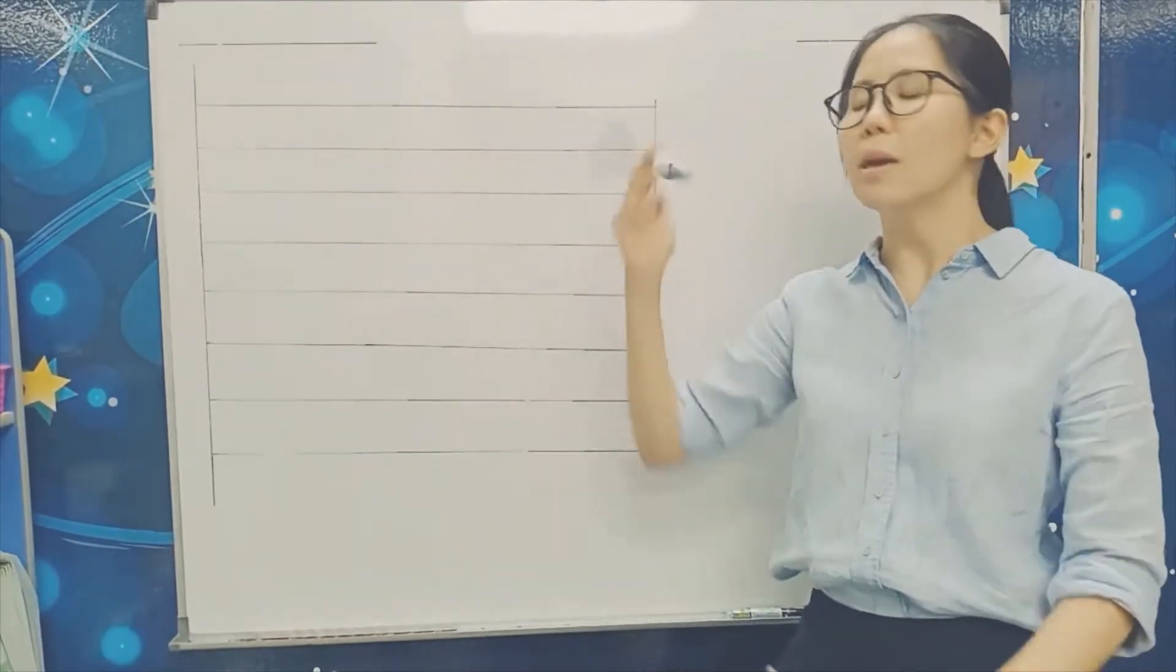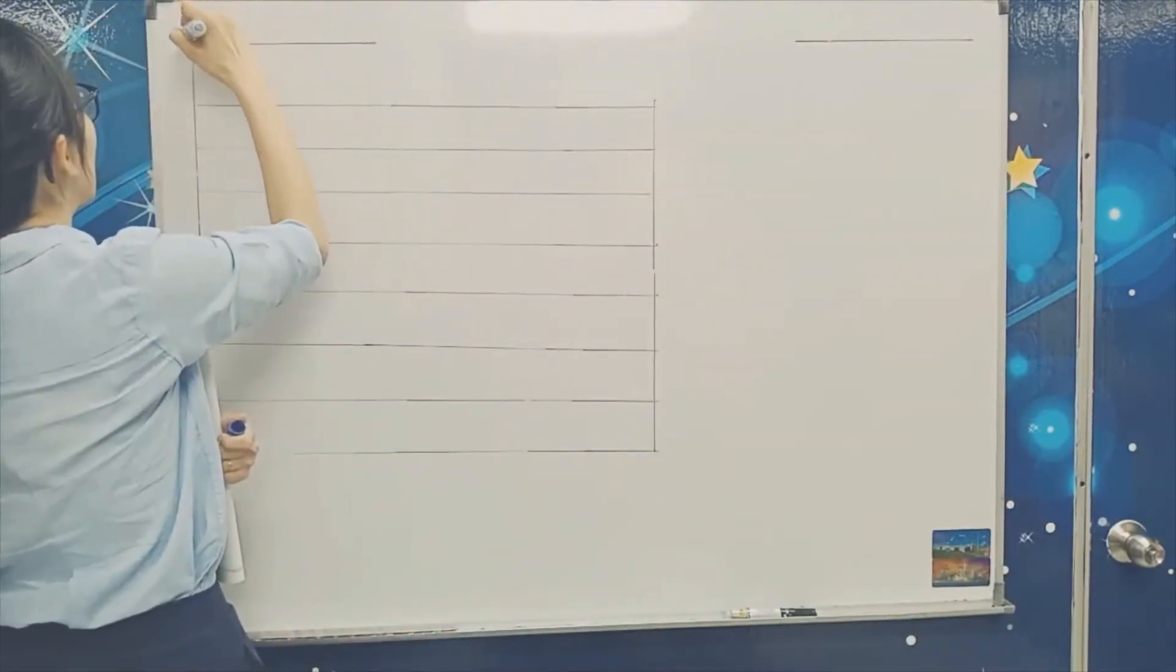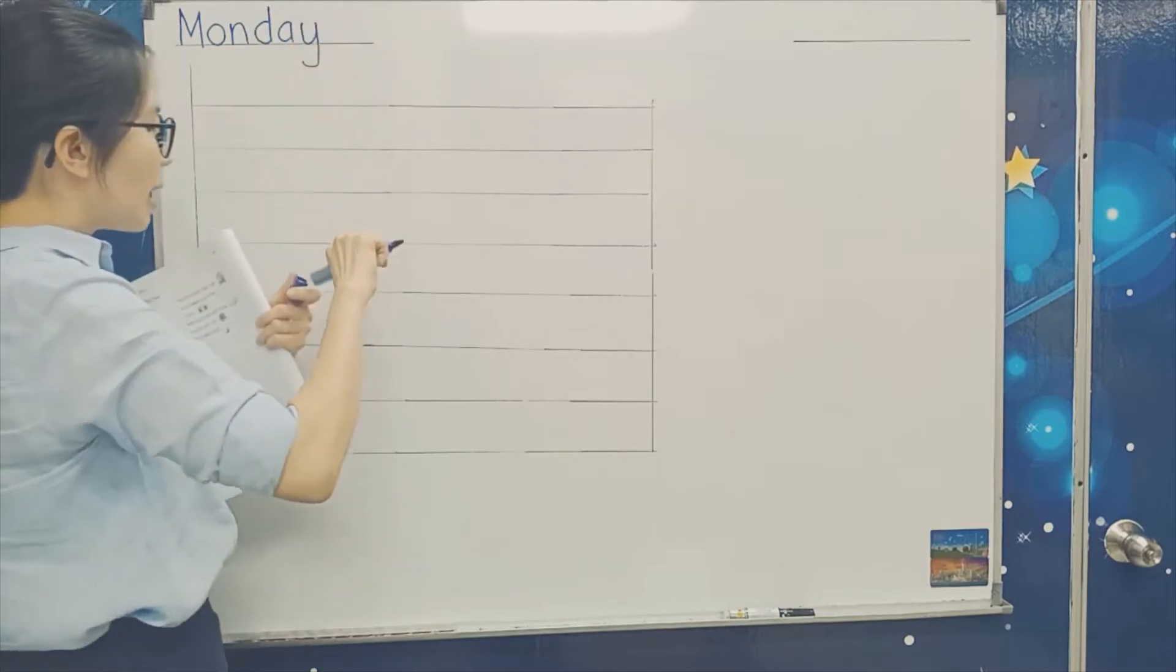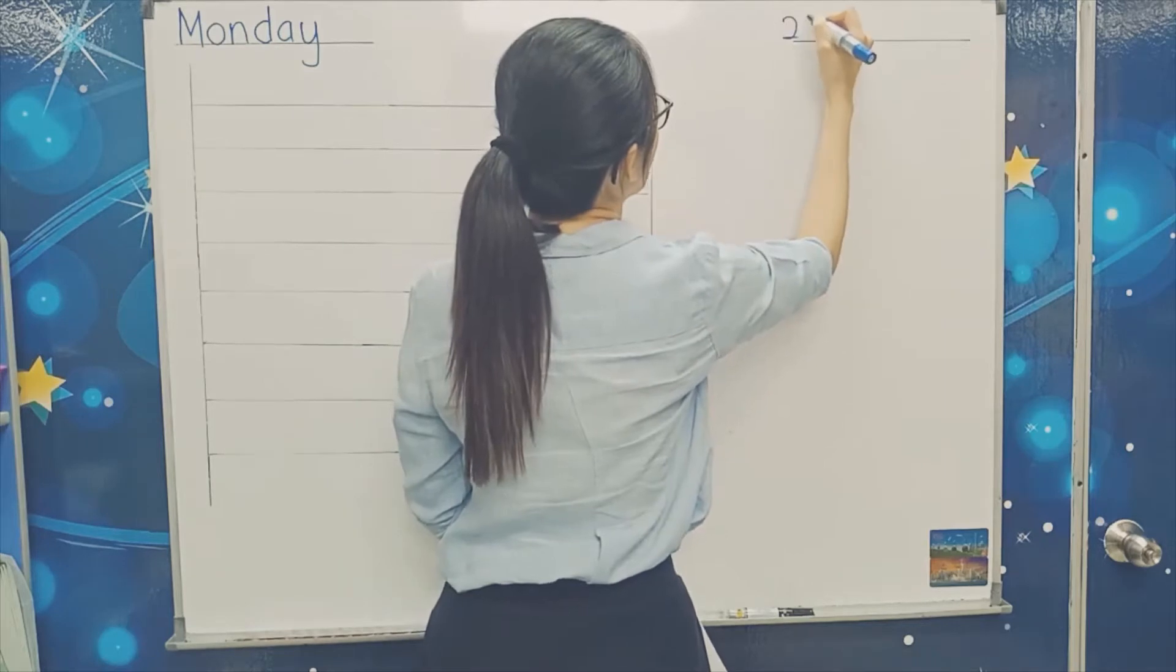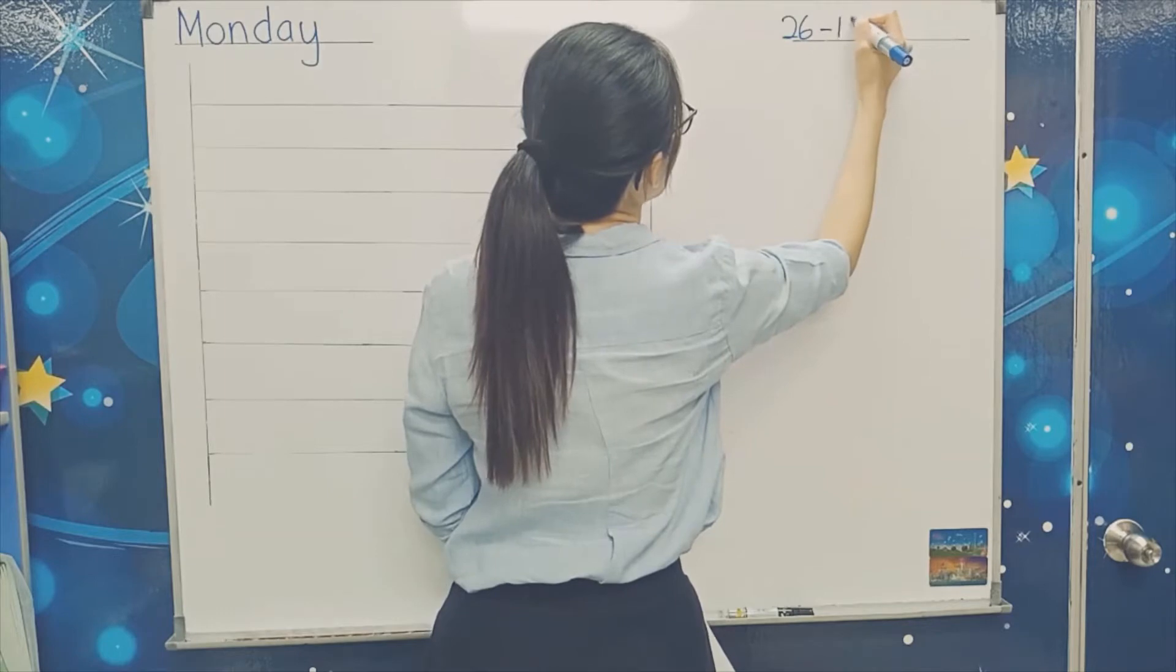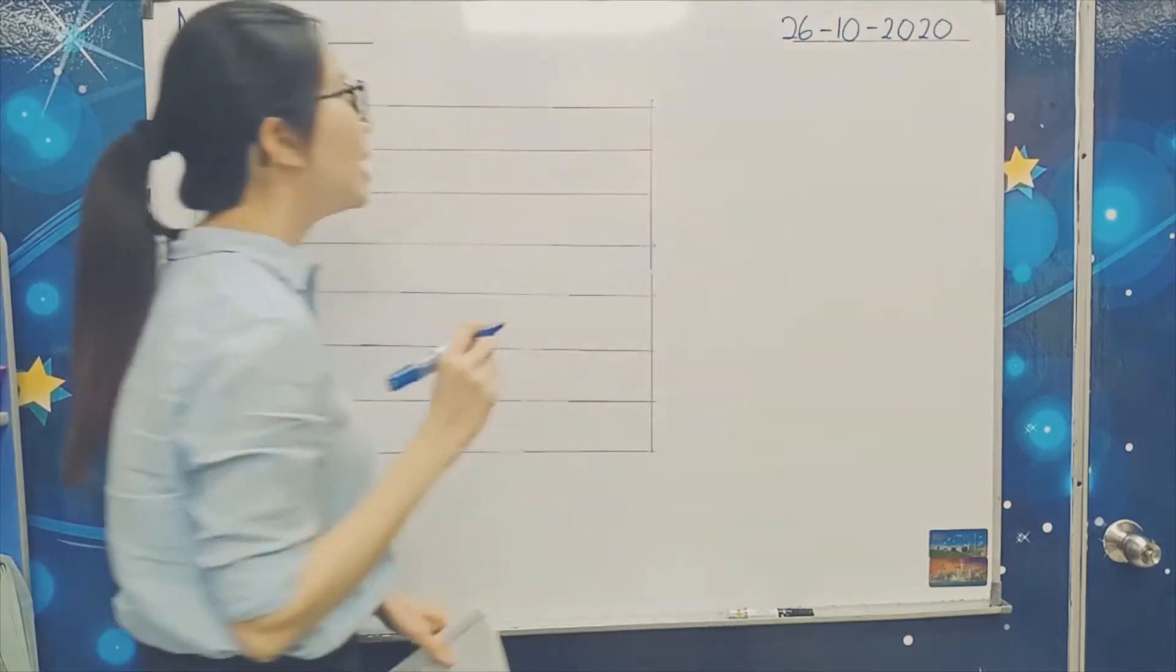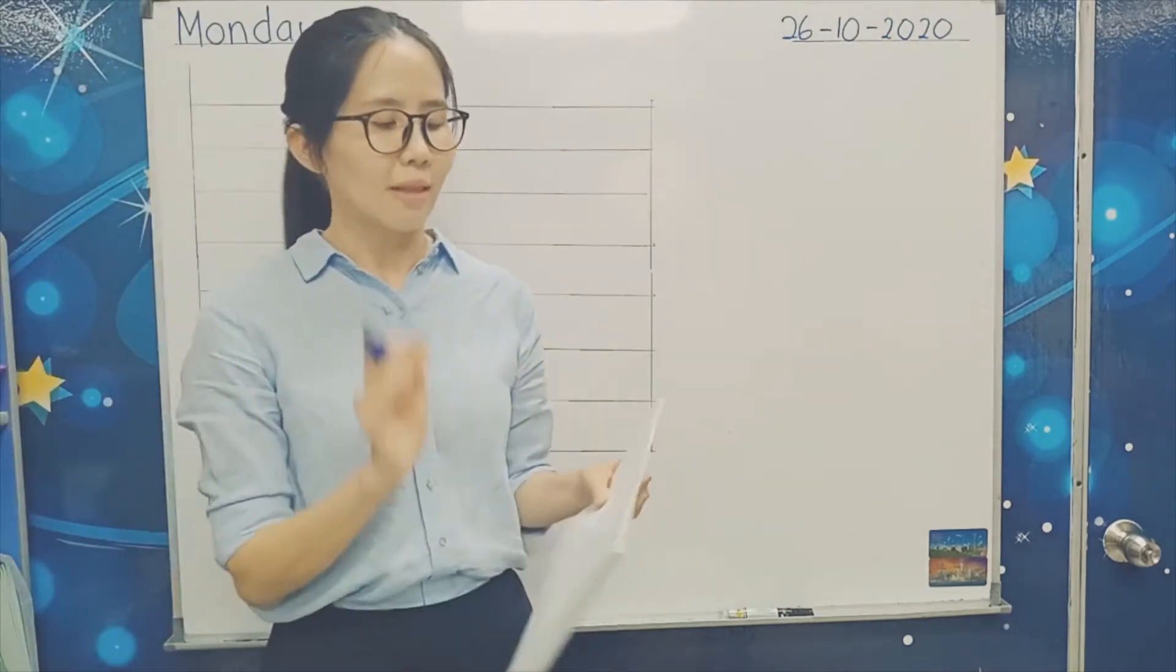On top, first let's write the day. Today is Monday, M-O-N-D-A-Y. And what is the date today? The date is 26, 26 of October. Just put dash 10, put 2-0-2-0. 26 of October and we are going to do the rhyme now.